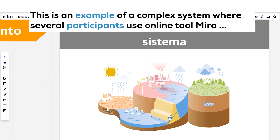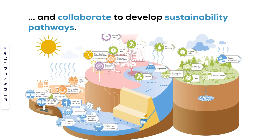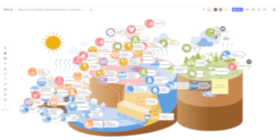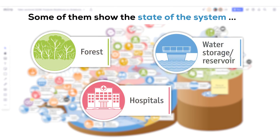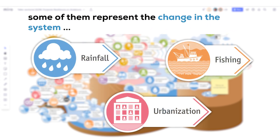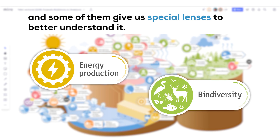Let's get into some of the details. Here is an example of a complex system where several participants use an online tool called Miro and collaborate to develop sustainability pathways. The system can be represented with different elements: some show the state of the system, some represent the change in the system, and some give us special lenses to better understand it.